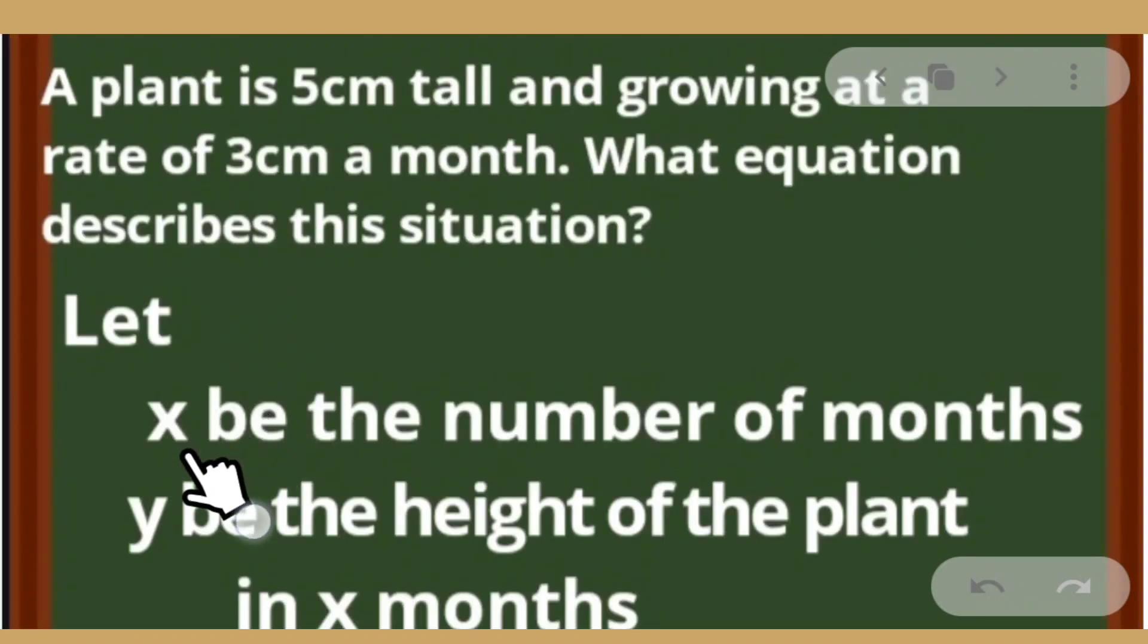For example, we let x be the number of months since there are two variables involved here, the number of months and the height of the plants. So we let x be the number of months and y be the height of the plant in x months.